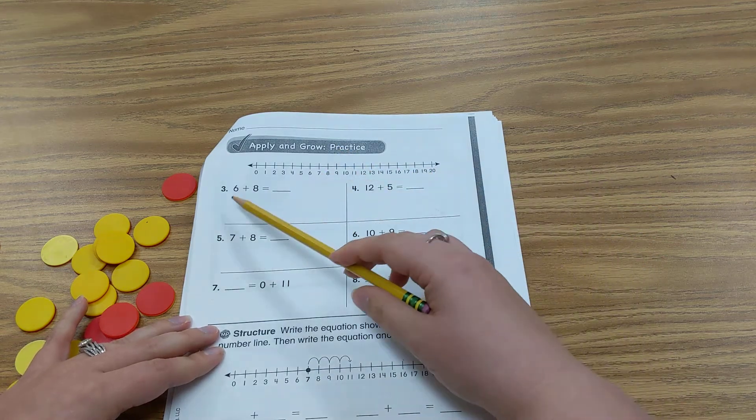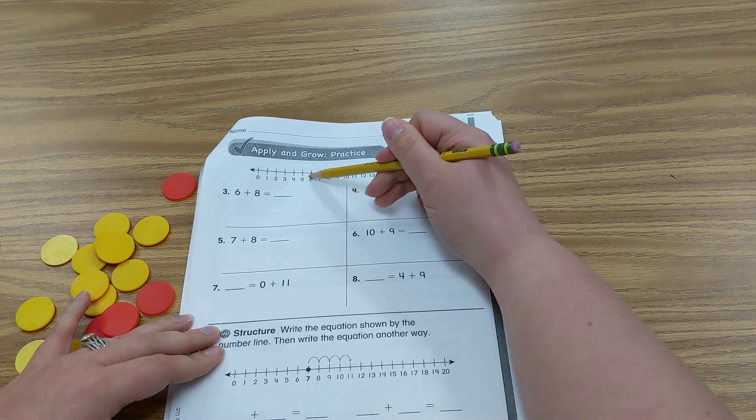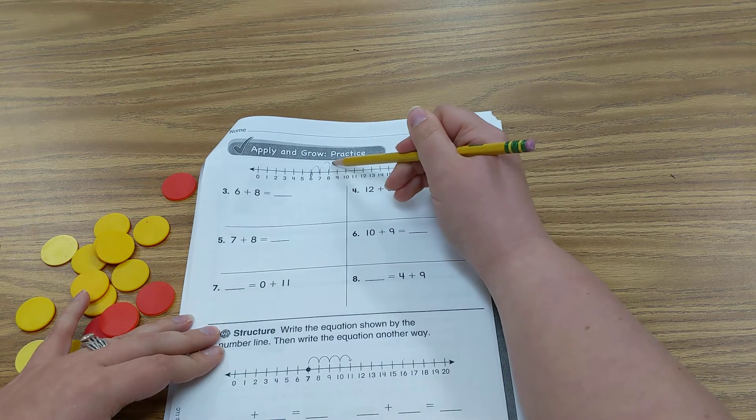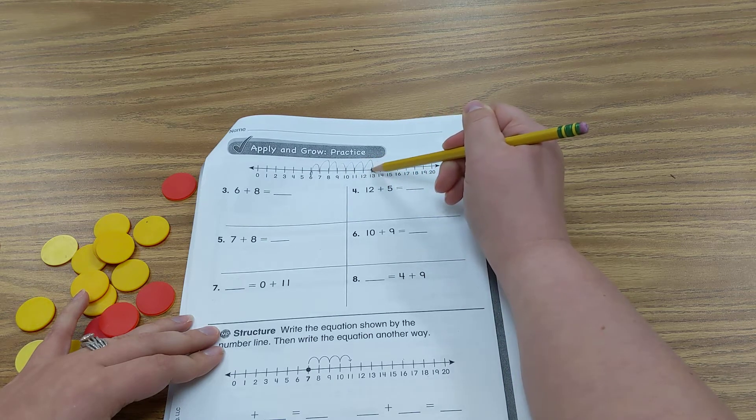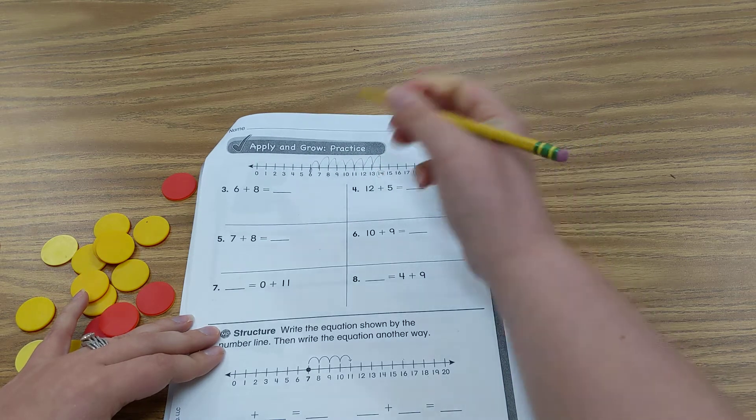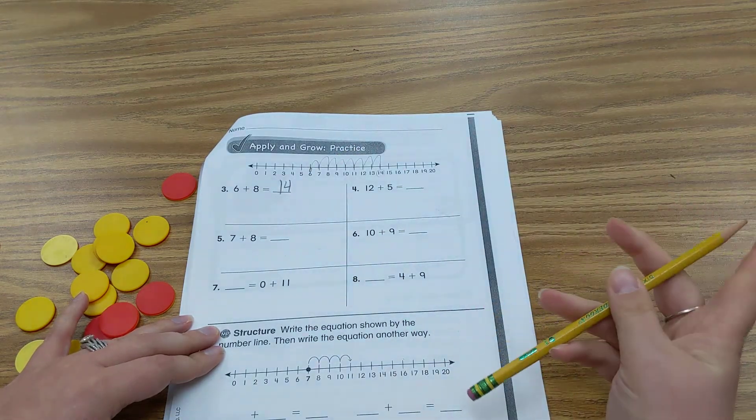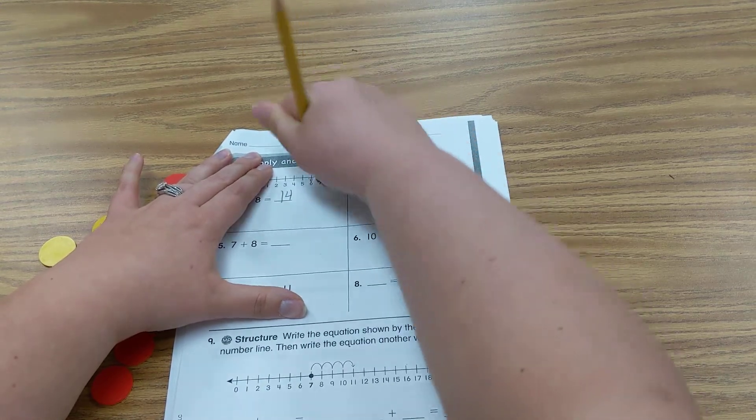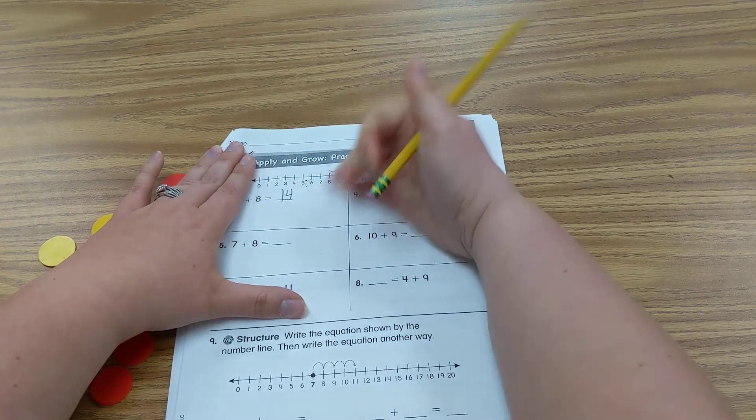Now when you are doing this one, you have only one line. So you might want to draw lightly so that you can reuse your line. Okay. So you have 6 plus 8. So go to 6 and we add 8. 1, 2, 3, 4, 5, 6, 7, 8. My whole is 14. So now I'm going to go ahead and erase it because I drew it lightly enough that I can reuse my number line.